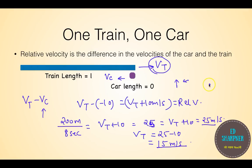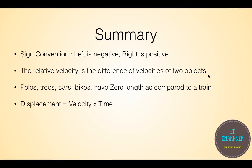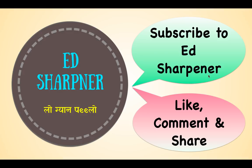To summarize: sign convention is important — left is negative, right is positive, up is positive, down is negative. The relative velocity is given as V1 minus V2, read as the velocity of object 1 with respect to object 2, meaning the observer is in object 2. Poles, trees, cars, and bikes have zero length compared to a train. The key expression is displacement equals time multiplied by relative velocity. Thank you for all the support; more problems on this topic will be covered in another video. Please leave feedback in the comments, subscribe to the channel, and share this video to help more students.